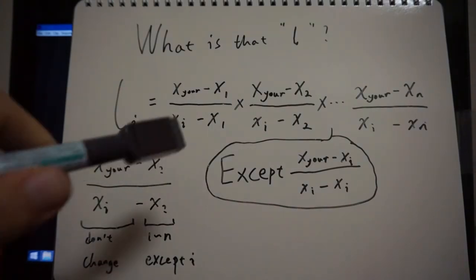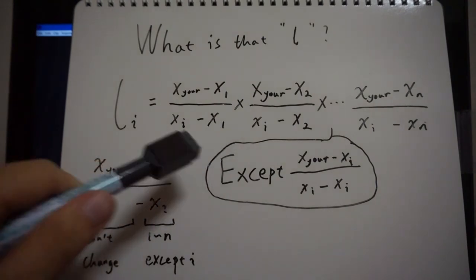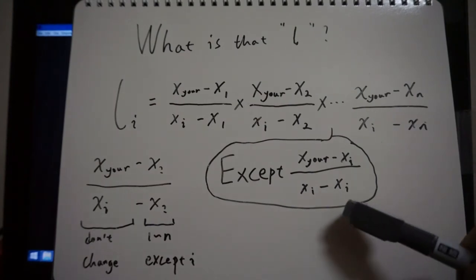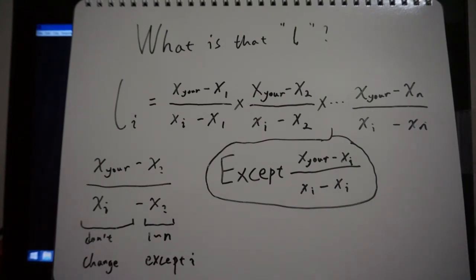Now, when you're multiplying, x on the left does not change. x on the right goes from one to n, basically everyone except i, which is the one you're calculating the weight for. Again, it's a lot of multiplying for each point you have to do.